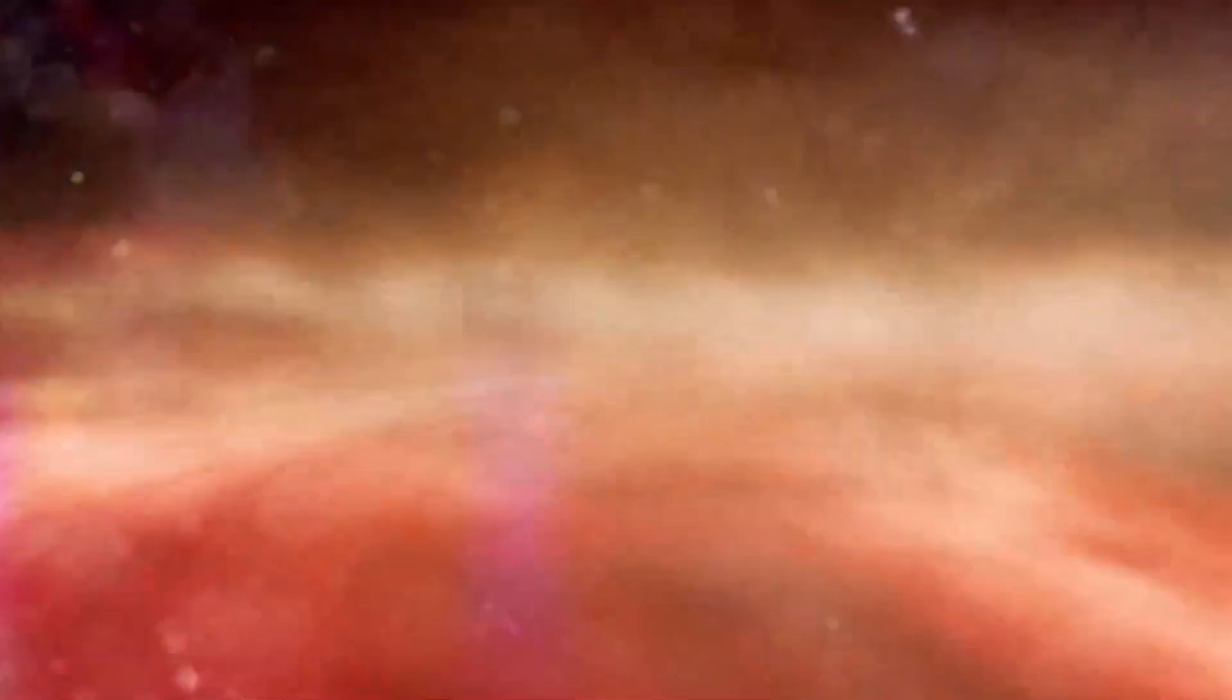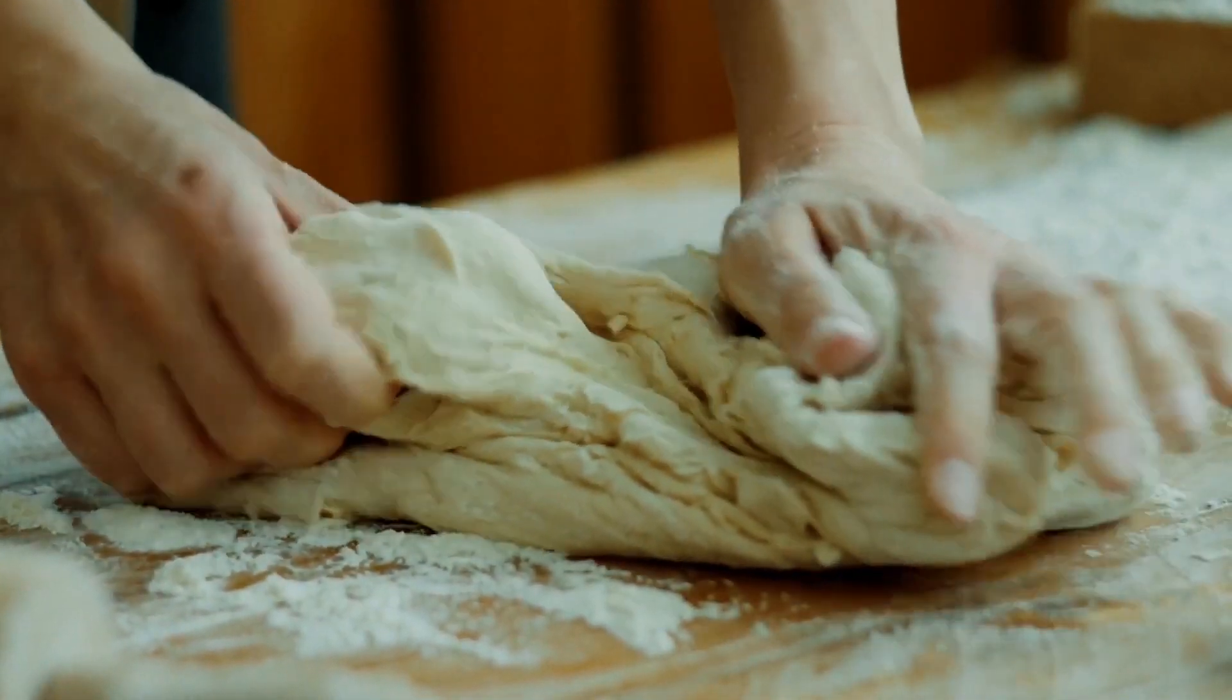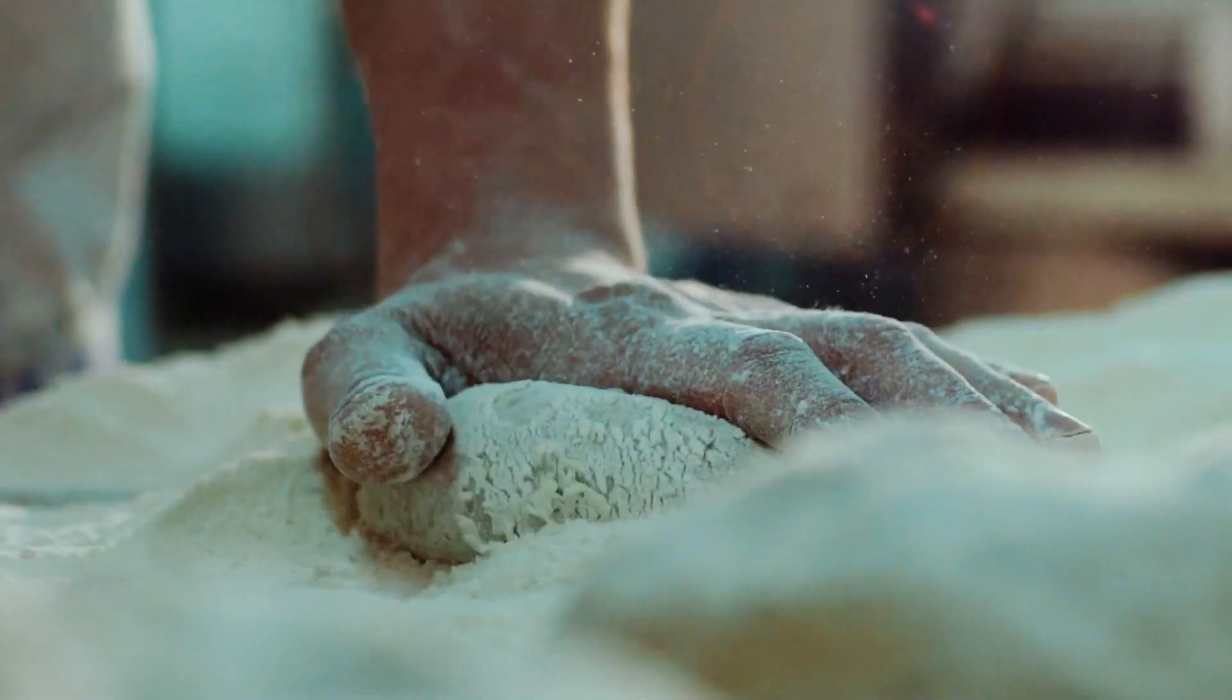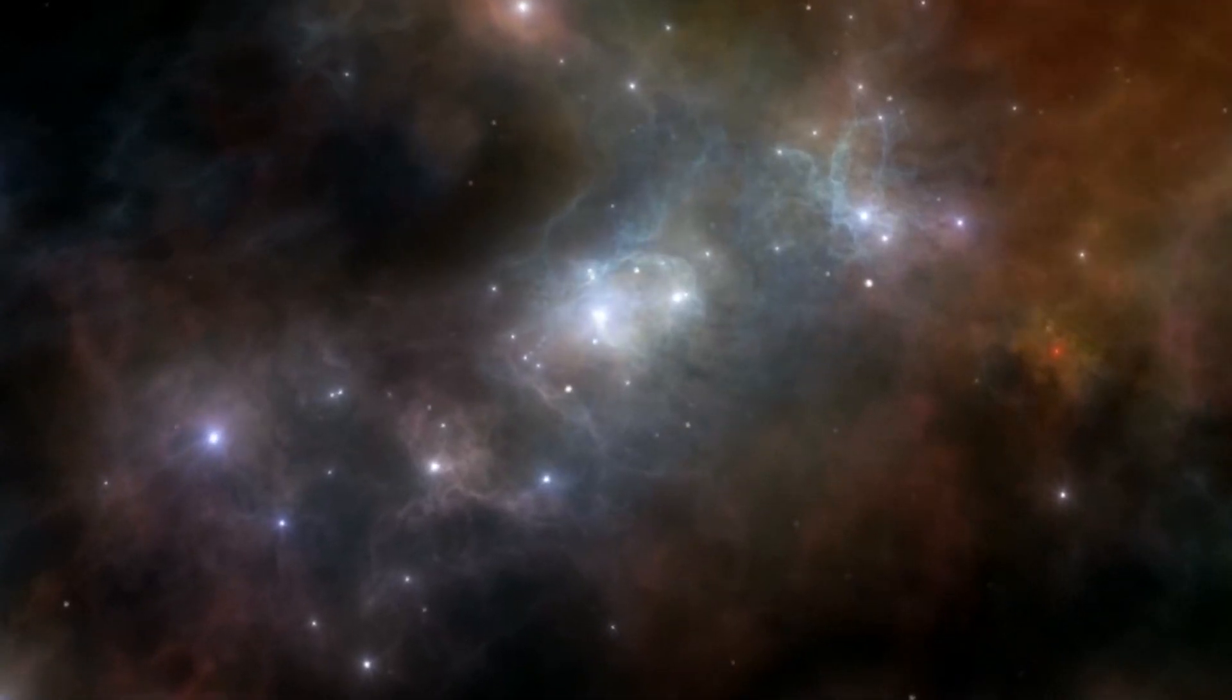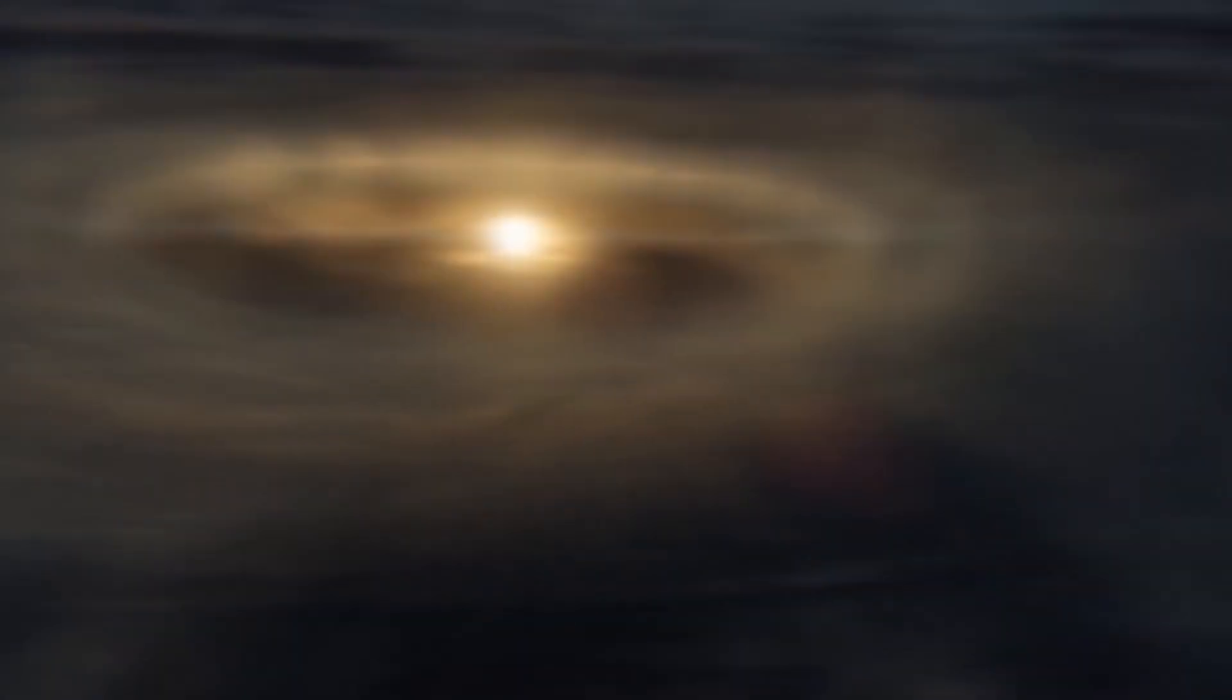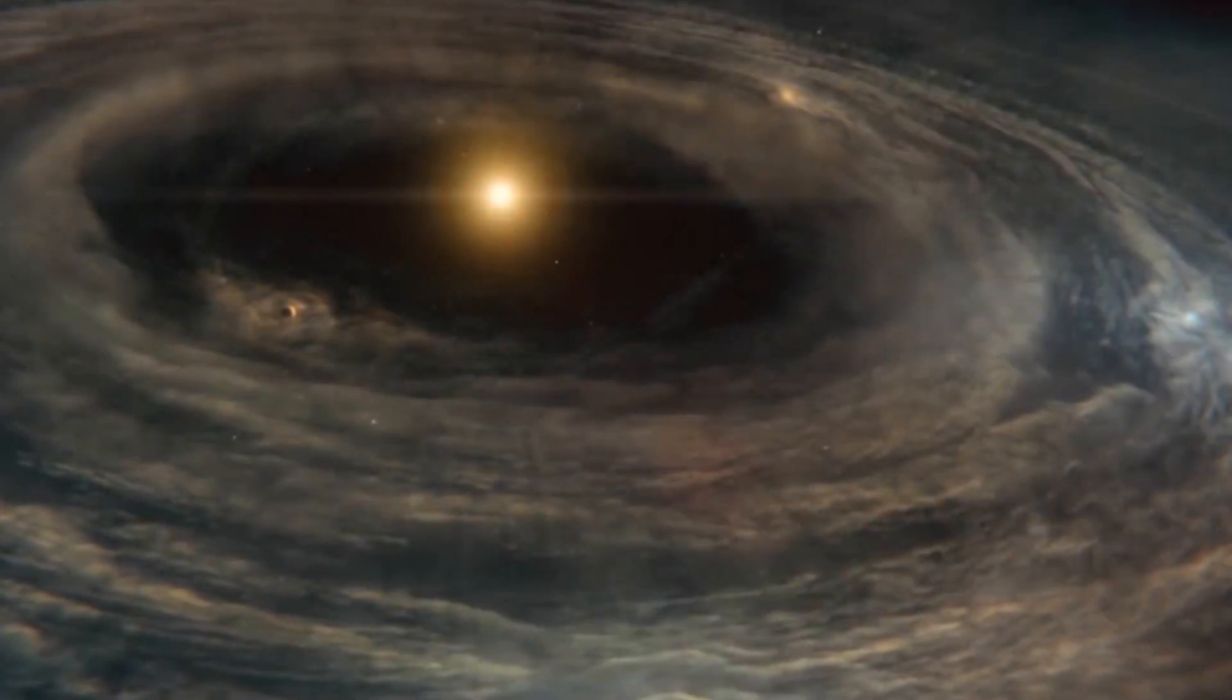One NASA scientist compared the process of turning gas into dust to turning flour into bread. And just like making bread, particular ingredients and conditions must exist. The WR 140 stars must come quite close to each other, about the distance between Earth and the Sun, to form the fingerprint-like rings. The process of WR stars makes this possible because, unlike most stars, they have no hydrogen which alone cannot form space dust. But they do have more complex and heavy elements and thus the ingredients for forming space dust are present.